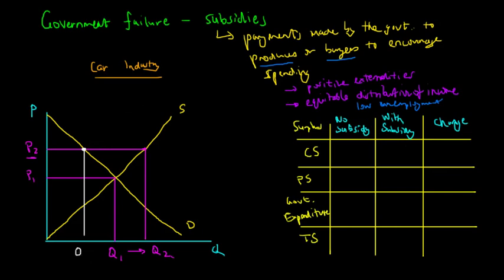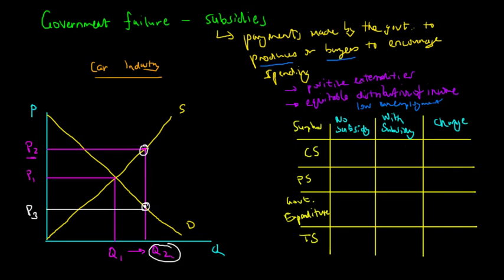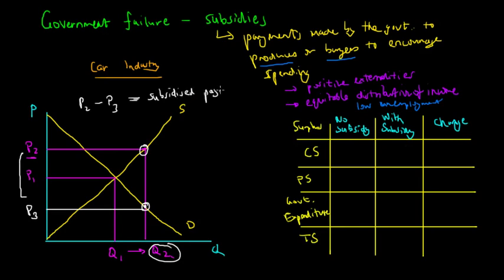So what the government does is actually subsidise the firms. Since production at quantity Q2 corresponds to demand at price P3, for the demand to match the supply, the government has to subsidise producers by the difference in price: P2 minus P3. This represents the subsidy payment. For example, if P2 is $1,000 and P3 is $500, the government pays the producer $500 for every car sold at quantity Q2.